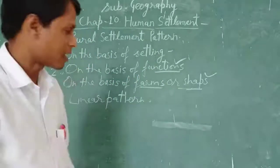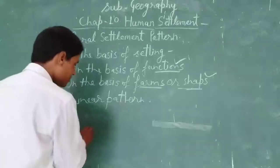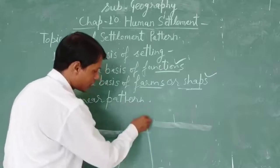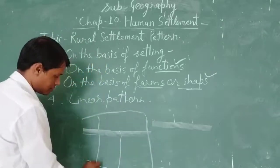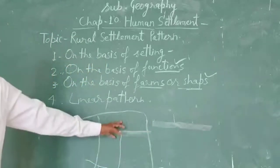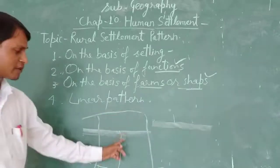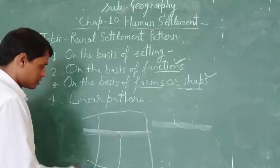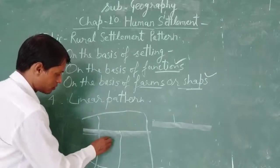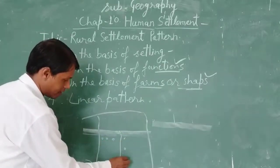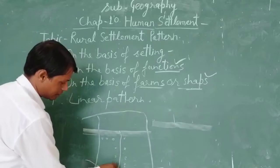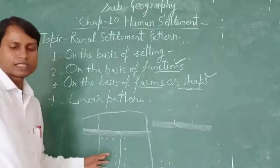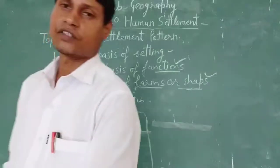Second one, rectangular. It means roads are constructed in the shape of rectangle. And alongside of roads, suppose that this is the road, and alongside of roads the settlements could be seen. So this is the rectangular shape of settlement.